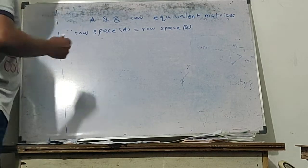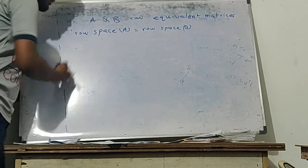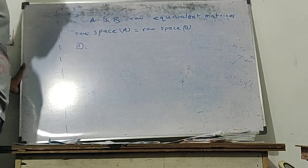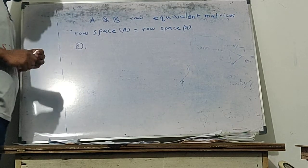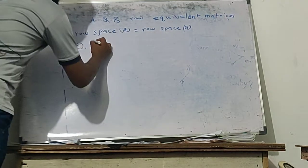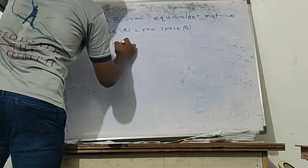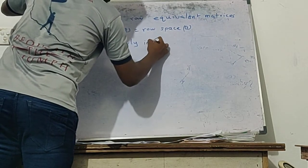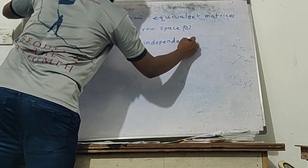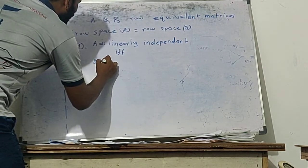If we have two row equivalent matrices, then there is a theorem which states two things. The first one is: the column vectors of A are linearly independent if and only if the column vectors of B are linearly independent.